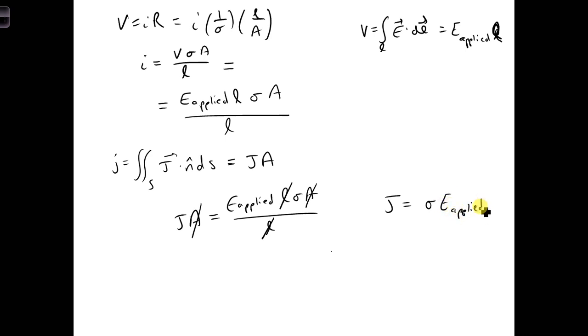So we did it. This is what is known as the microscopic form of Ohm's Law. So it's just another way of writing Ohm's Law, but we're describing the same physics as the one you're more familiar with, which is V equals I R.